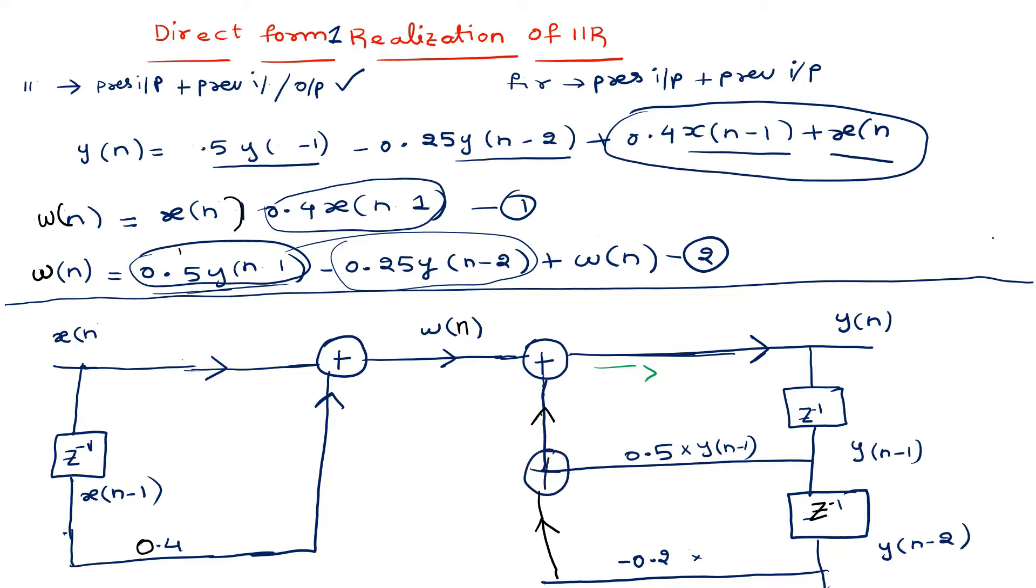These are algebraically adding. So we have the multiplication: 0.25 times y(n-2) and 0.5 times y(n-1), and we add them. In this way, we realize the IIR filter using direct form one.